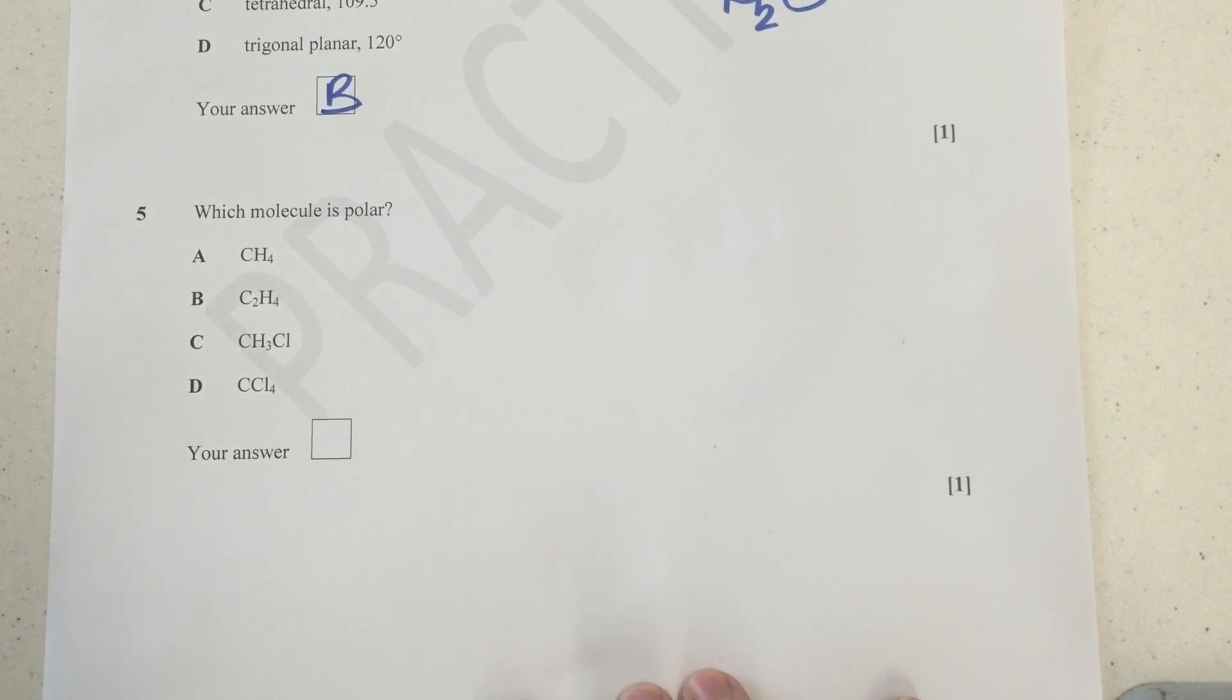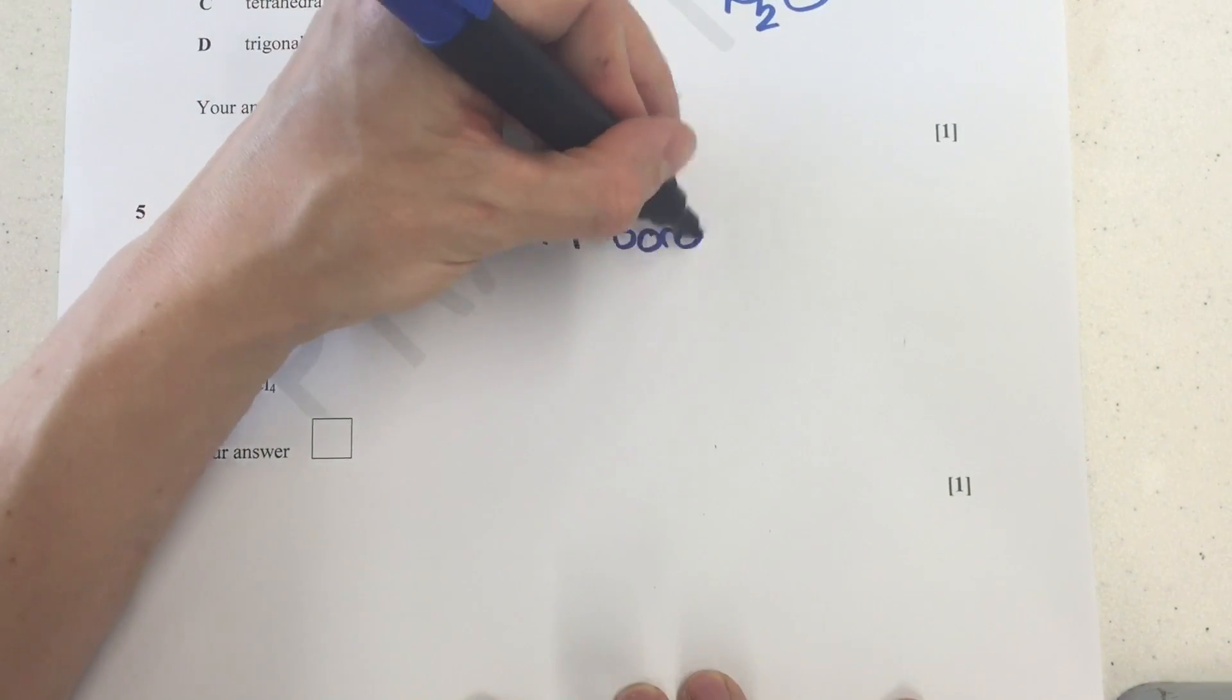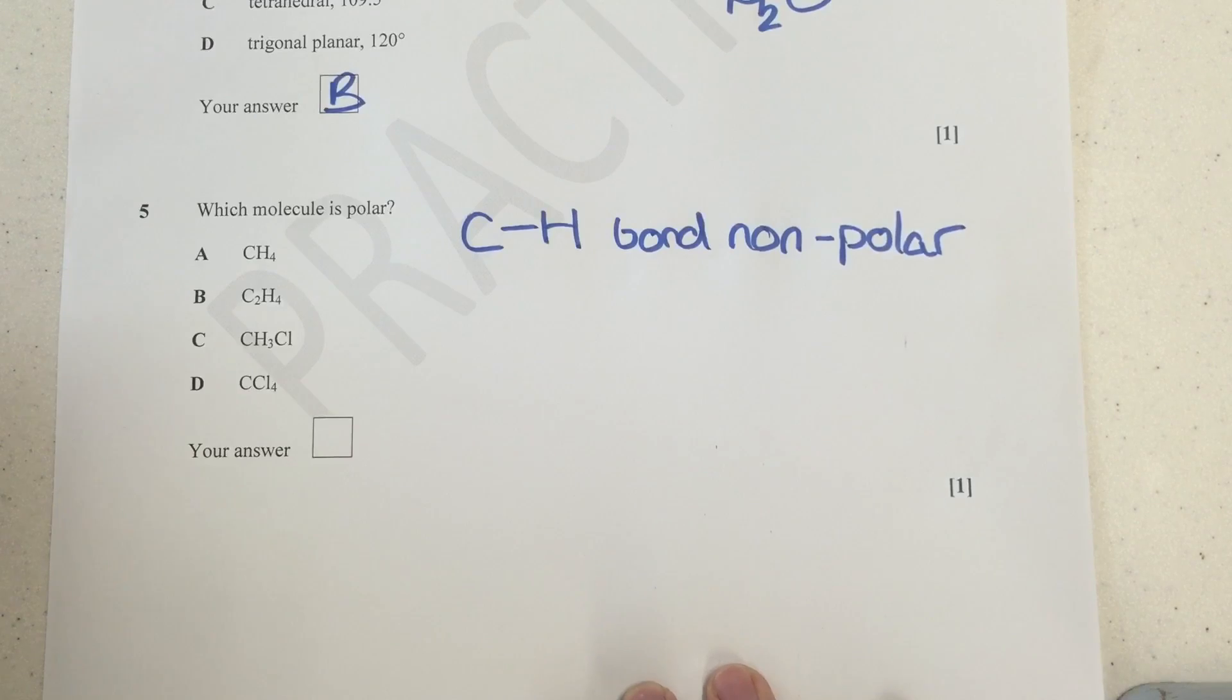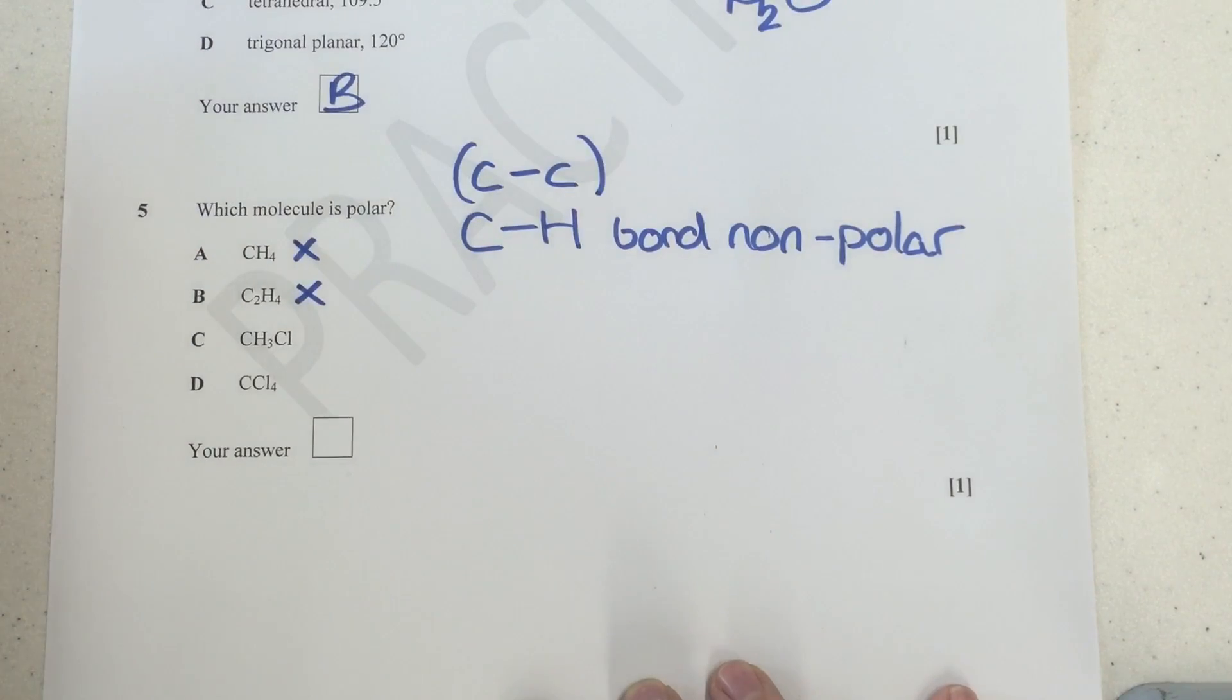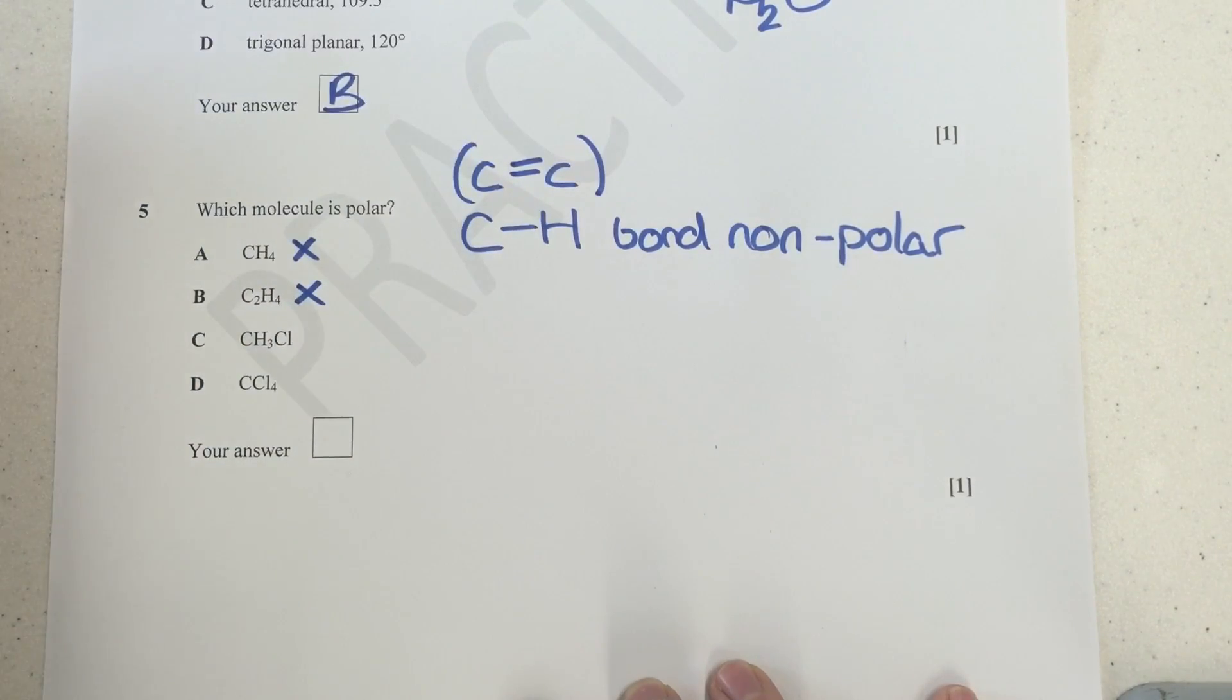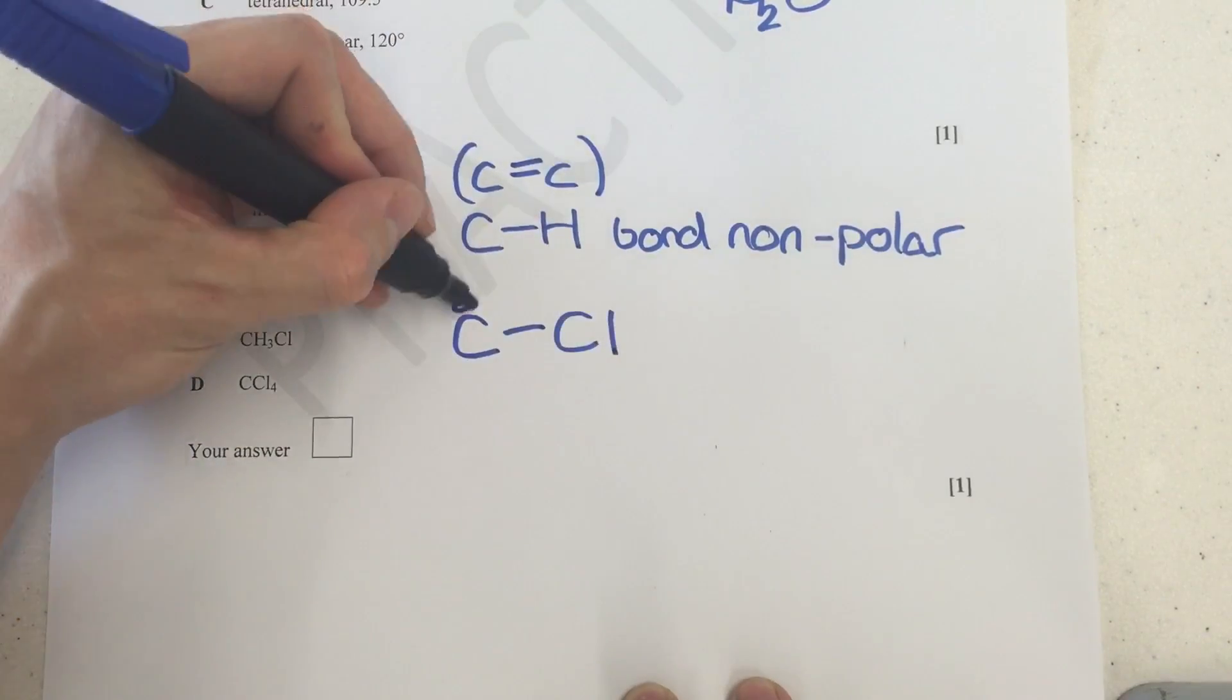Down here, which one of these molecules is polar? Now, before we get started, I just want to reinforce that as far as we're concerned at A level, the CH bond is regarded as non-polar. We do not consider the CH bond to be polar at all. And so what that means is here, the A and B molecules, immediately, they cannot be polar molecules because they've got non-polar CHs, and they would also have very non-polar, because it's two of the same element, CC bonds. In fact, C2H4 is a double bond just there, so sorry for that. This one here doesn't have a CC bond, should mention that as well.